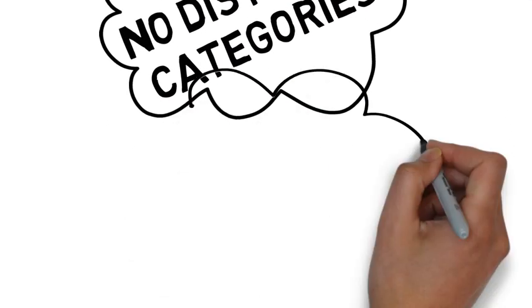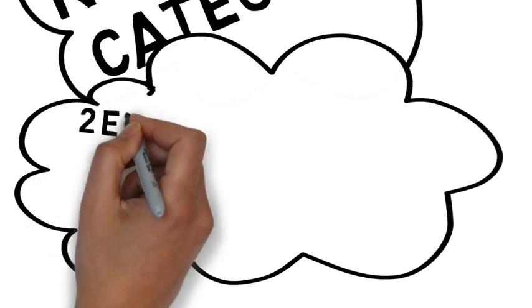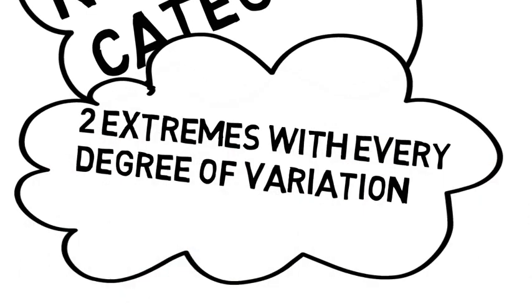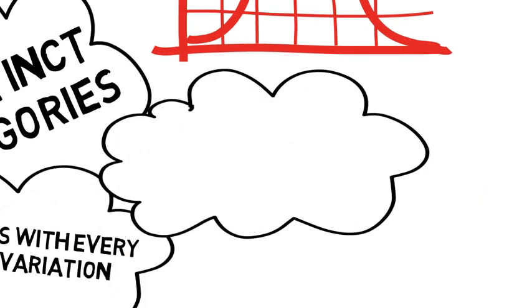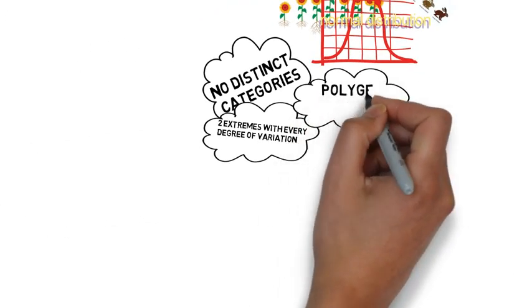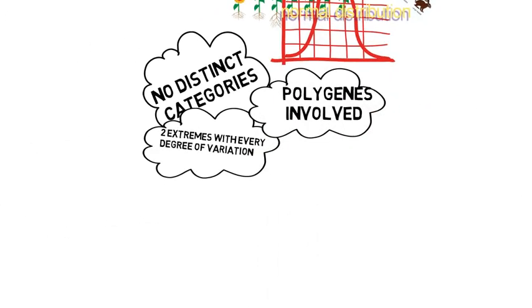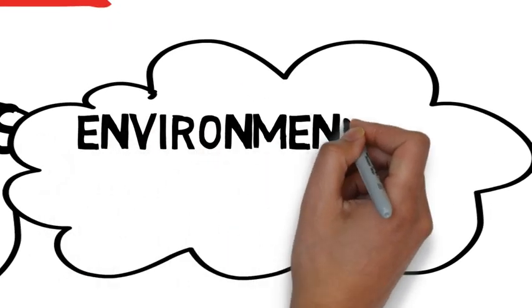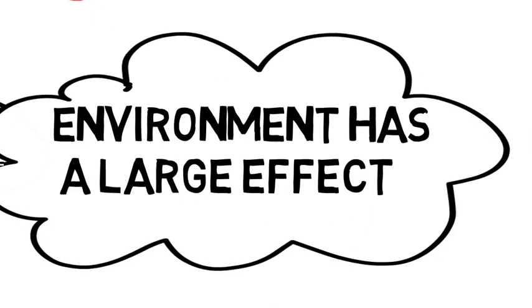Now during continuous variation there are no distinct categories. In both extremes you have a range of different values and as a result it is represented by polygenes. So many genes represent it and due to this the environment has a large effect on this type of variation.